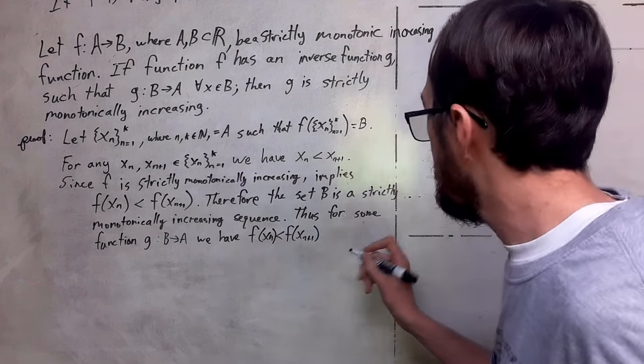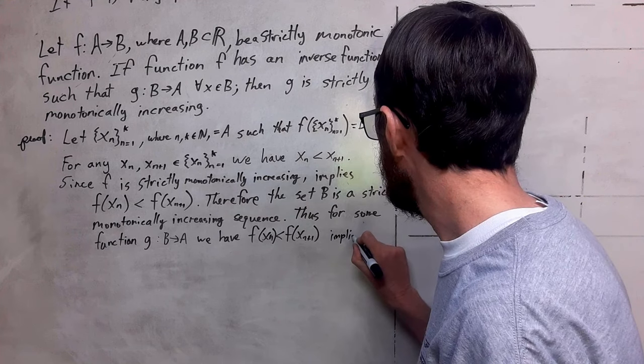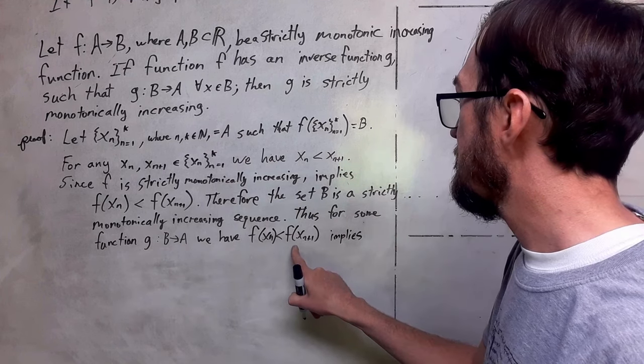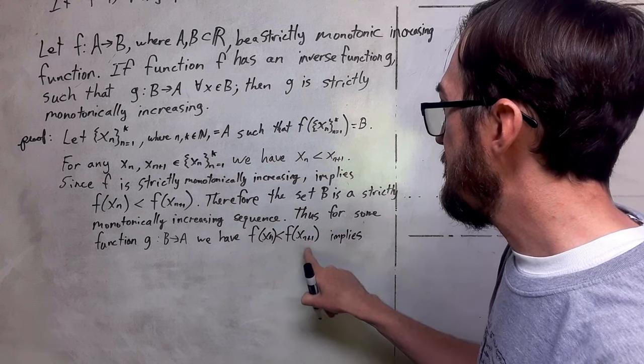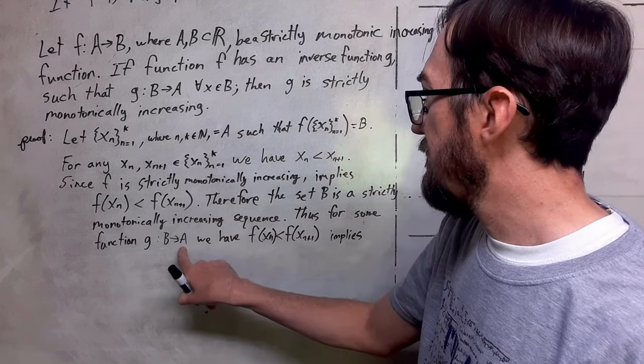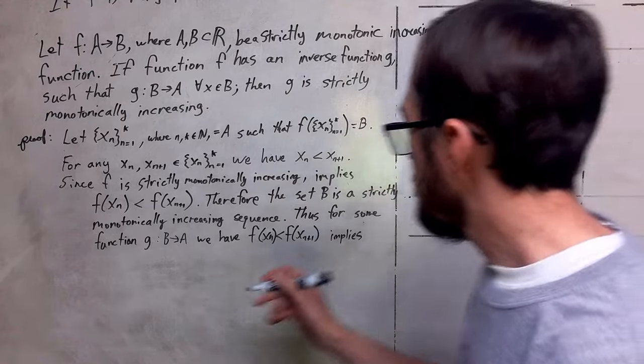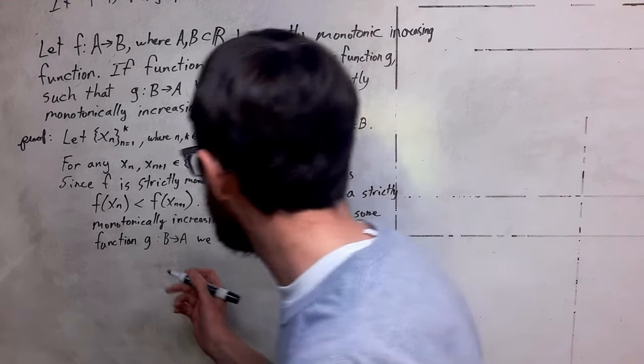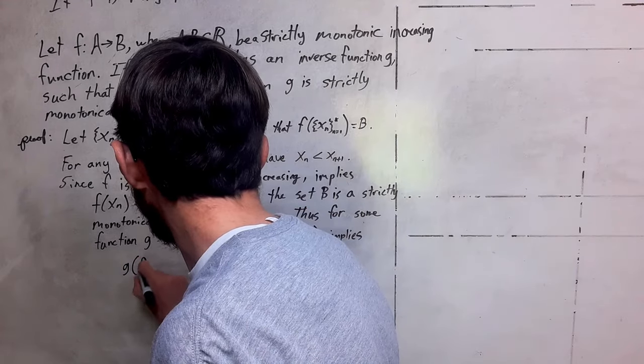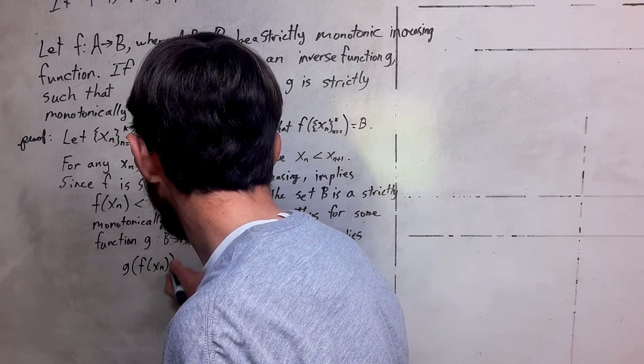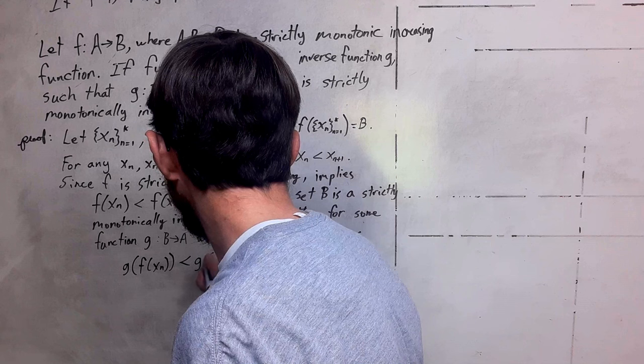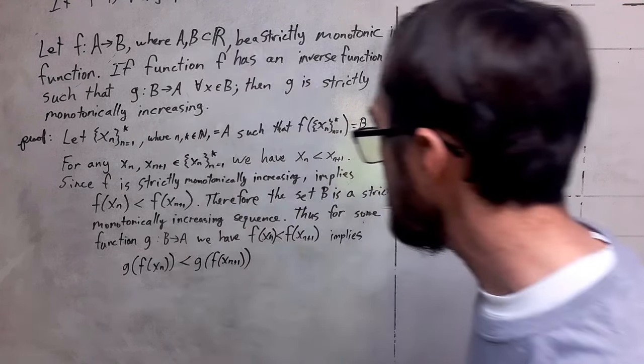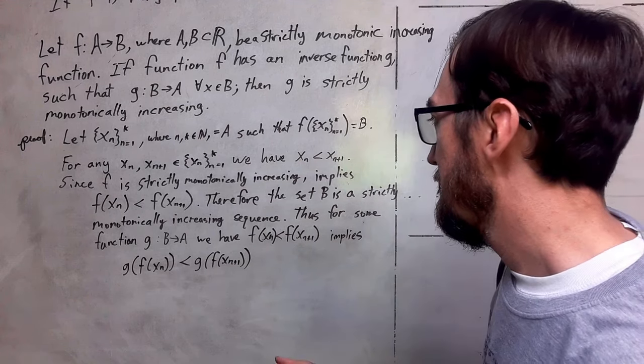Since we have this, this implies that if I take g and operate it on this sequence, the image of this is going to be the set a. So we're going to run these numbers through the function of g. So we're going to have that g of f of x sub n should be less than g of f of x sub n plus 1.